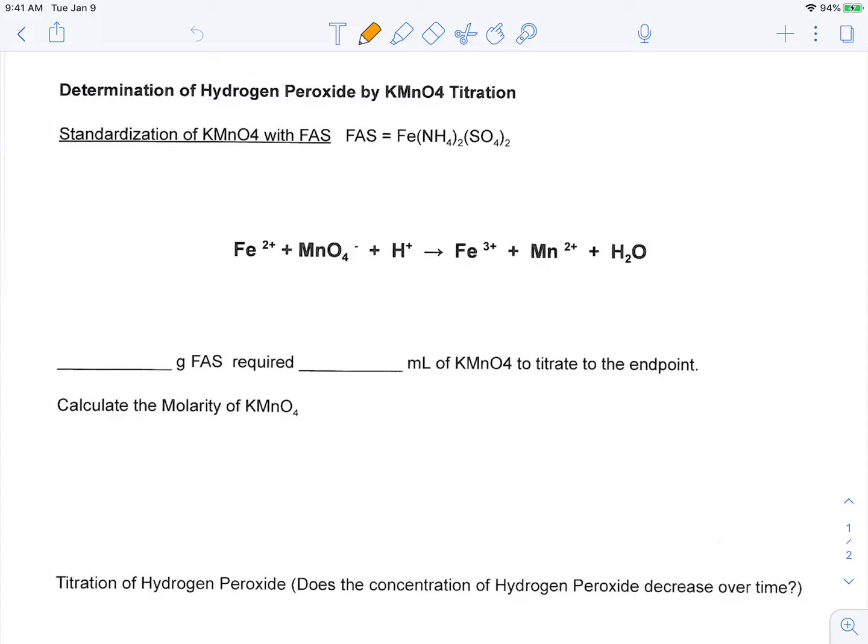So the first thing that we need to do is standardize our potassium permanganate. It's a solution that tends to break down over time. It's fairly reactive, so what we're going to do is standardize it with this FAS, this ferrous ammonium sulfate. What we see here is the actual formula for ferrous ammonium sulfate. Sometimes you'll see these moved around, but those are all the different parts.